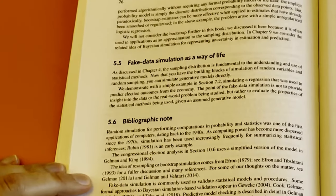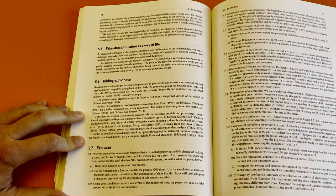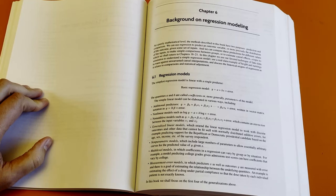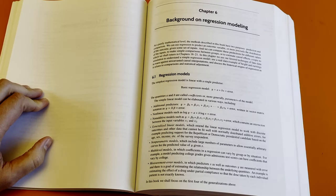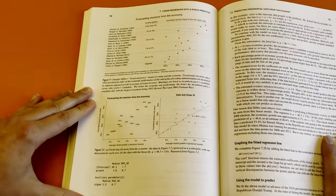As a Bayesian, Gelman views model fitting through the lens of understanding the underlying data generation process, with simulation being a key tool. Part 2 finally gets into the meat of regression modeling. In the chapter on regression modeling, standard formulas are presented focusing more on practical application than theory.